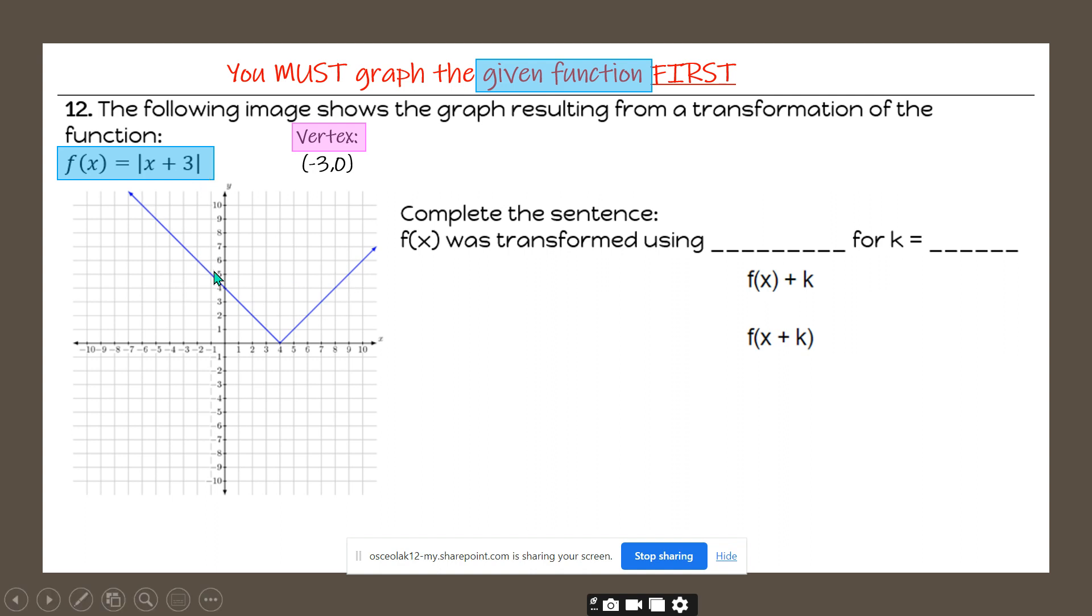And the vertex of this graphed function is certainly not (-3, 0). So if I put the vertex of my given function at (-3, 0), now I have my given function and I need to compare that to the graphed function. So what it's asking is what transformation happened from the given function to the graph function.